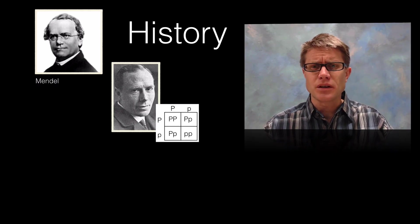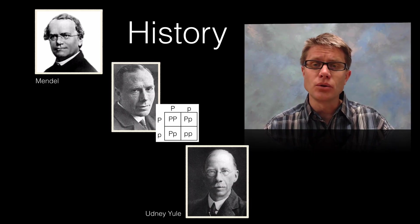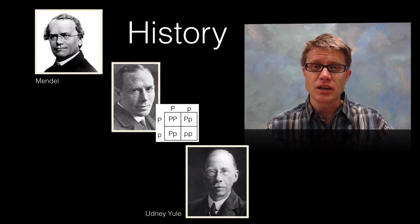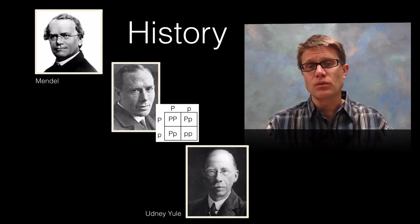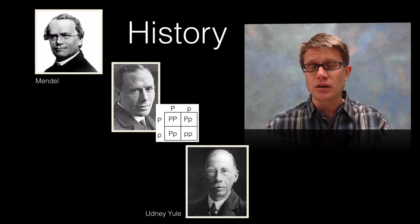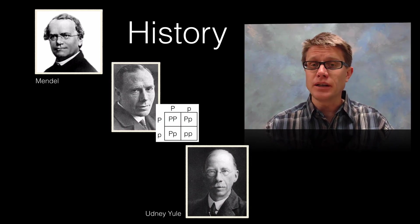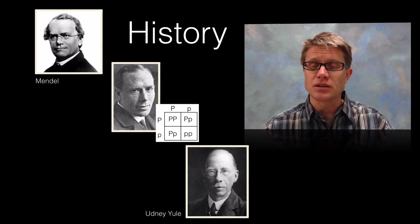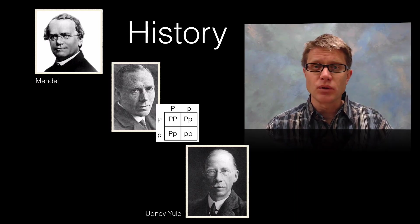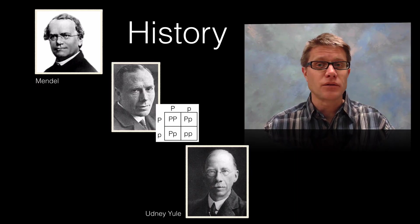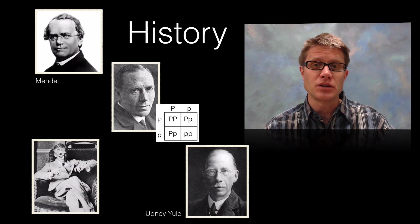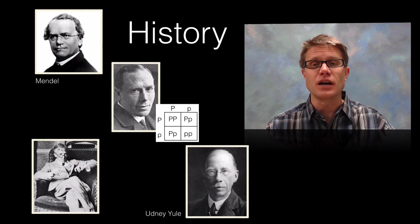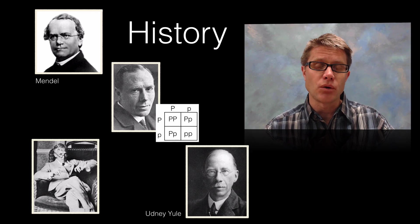But there were a lot of doubters at that time. So for example Udney Ewell was a statistician and he said that your Punnett square might work in one generation. But over a series of generations we're going to see an increase in the dominant allele. And so the recessive allele is not going to stick around. And so Punnett wasn't much of a mathematician. So he asked a friend of his, G.H. Hardy, to take a look at the problem and at least the contradiction that Ewell was putting forward.